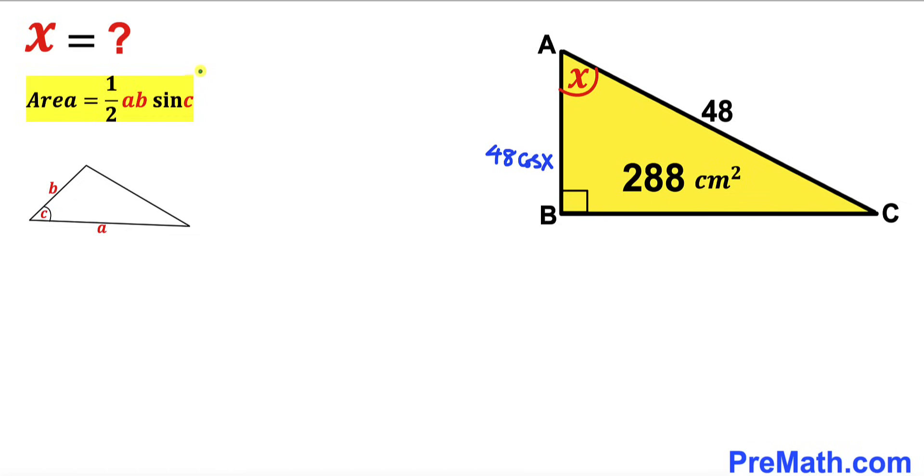Let's recall the area of a triangle formula: Area equals one-half times AB times sine of angle C. As you can see in this diagram, we've got our two side lengths A and B, and the angle between these two side lengths is C.